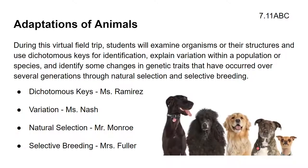Today we're going to do adaptations of animals. Here in this virtual field trip, students will examine organisms and their structures and use dichotomous keys for identification, explain variation within a population or species, and identify some changes in genetic traits that have occurred over several generations through natural selection and selective breeding.